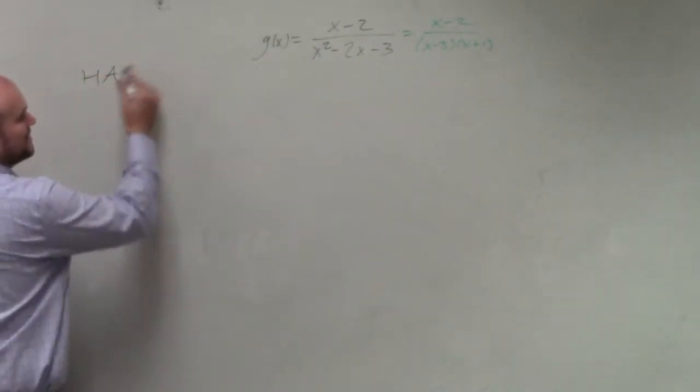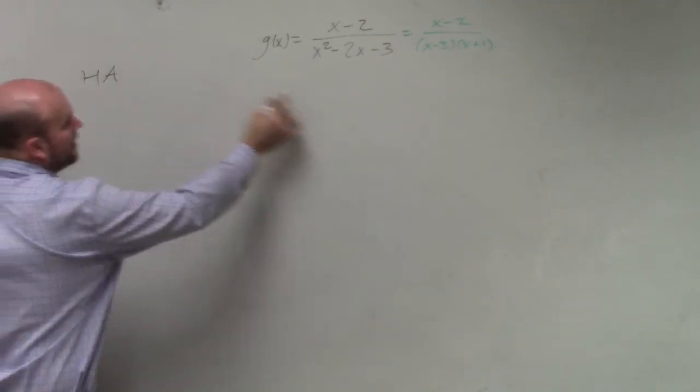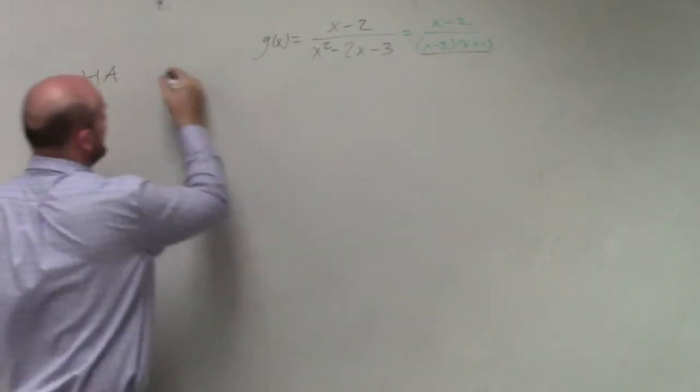But in this case, we don't have any holes. So therefore, our two asymptotes, we just set our, I'm going to take the factored form, and you set it equal to 0.